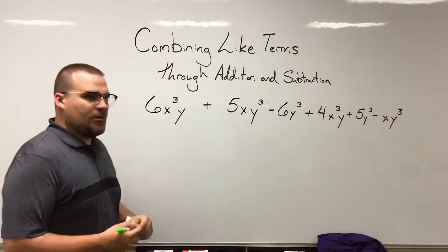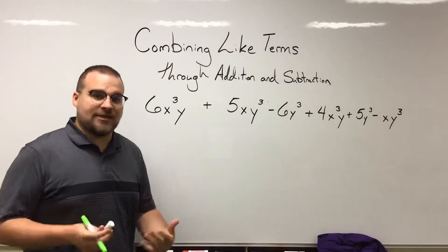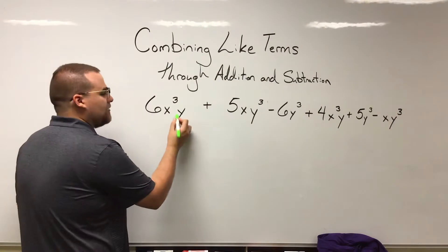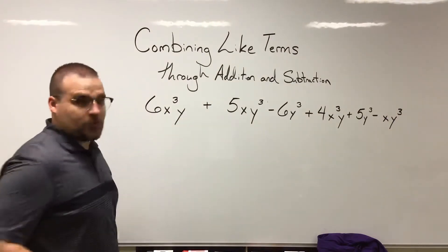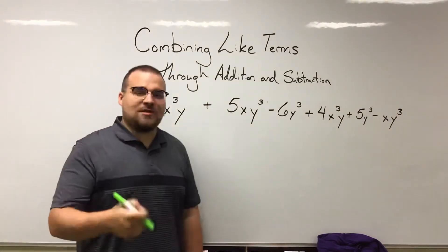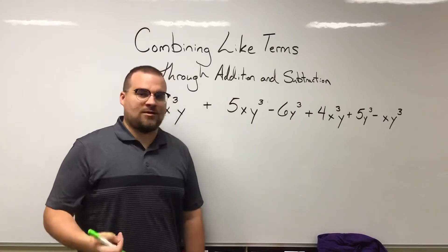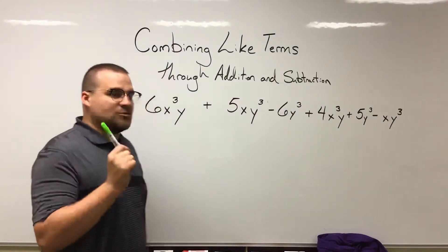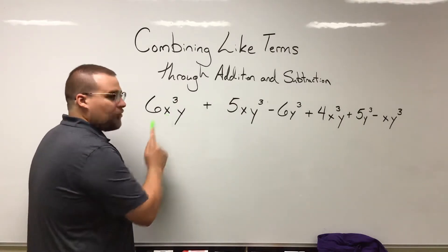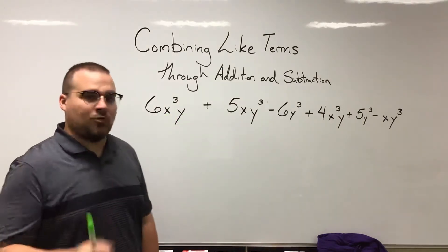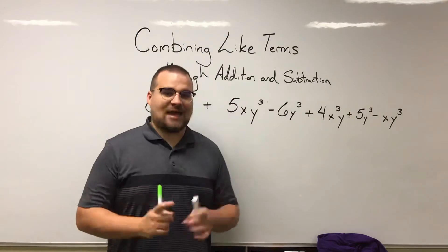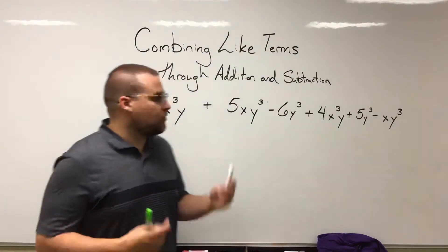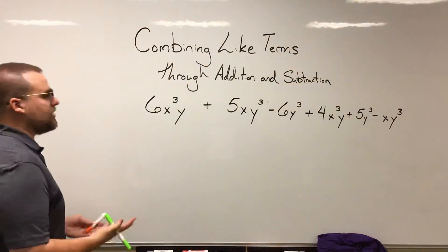When we look at this very first term, 6X³Y, the variable configuration here is X³ and Y¹. Anything that we want to combine with that has to look exactly the same—not just the X³, but also the Y. All of it has to match, not just one part.